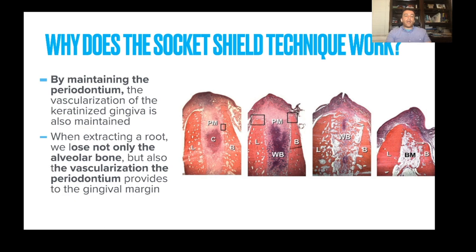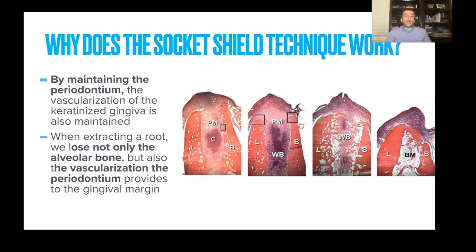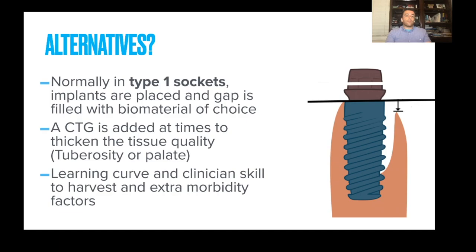By maintaining the periodontium, the vascularity of the keratinized gingiva is also maintained. When we extract a root, we lose not only the alveolar bone but also the vascularity of the periodontium providing nourishment to the gingival margin. Normally in type 1 sockets — sockets with intact buccal and lingual plates — implants are placed and the gap is filled with a biomaterial of choice. We typically add a connective tissue graft from the tuberosity or palate to thicken the tissue and change the biotype from thin to thick, though there is a learning curve and extra morbidity factors.